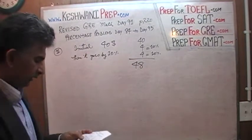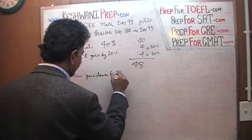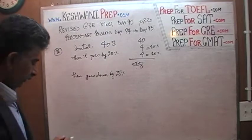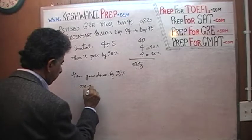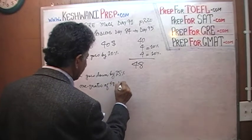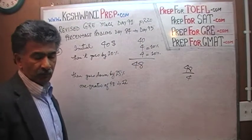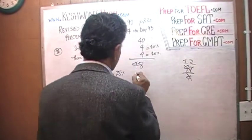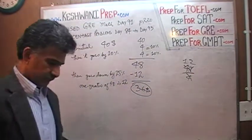Then we are told that it goes down by 25%. Well, 25% of 48 is what we are trying to figure out. 25% is the same as one quarter. One quarter of 48 is 12. Just do it out here — divide by 4. How many 4s in 48? There are 2 of them in 8. So it decreases by 12, and therefore our final amount is $36.